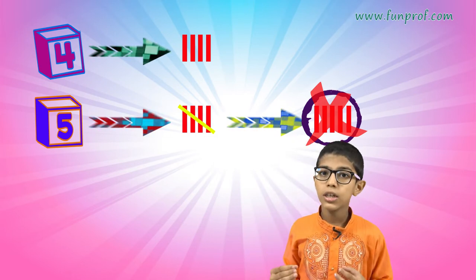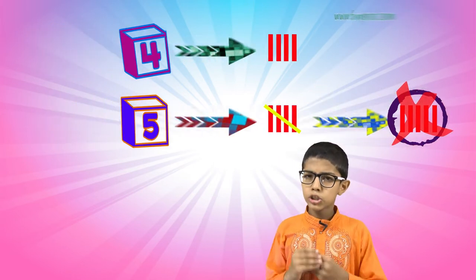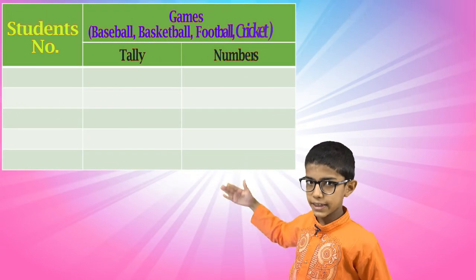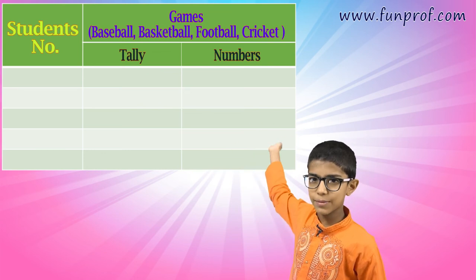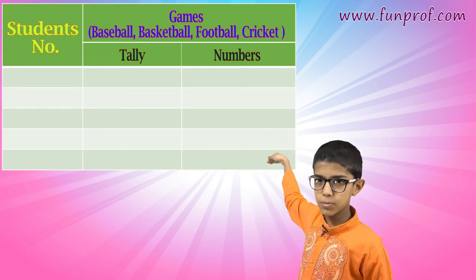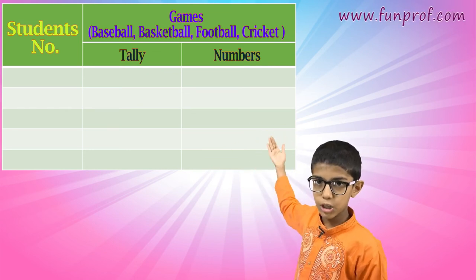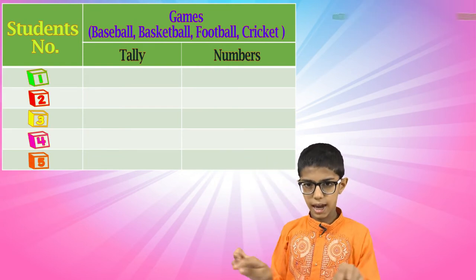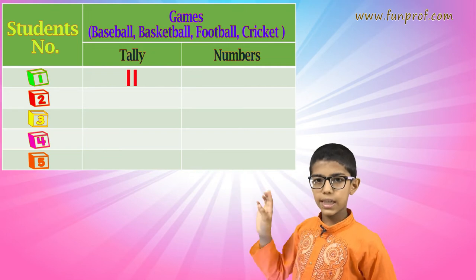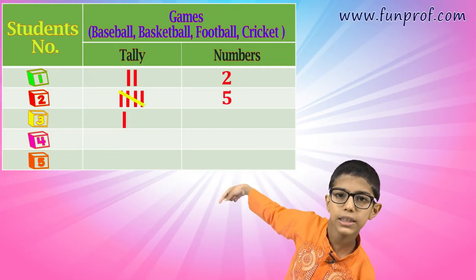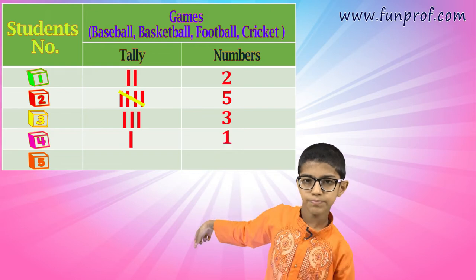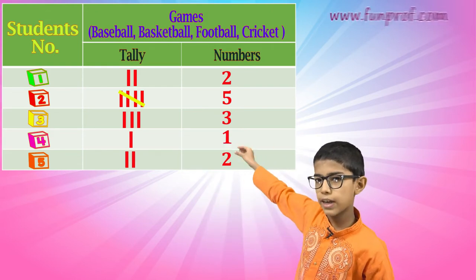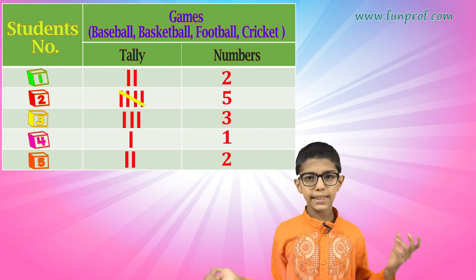So now that was about tally. If some information is given — for example, sports are listed such as baseball, basketball, football, cricket — the game names are written and you count them: 1, 2, 3, 4. The games are written and you represent the count in tally form.